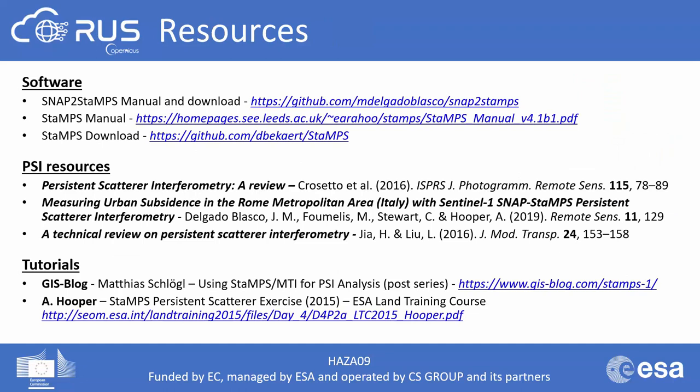For additional resources on PSI processing: for software, refer to the SNAP to StaMPS manual, the StaMPS manual, and the SNAP to StaMPS software download. For PSI resources, I recommend the Persistent Scatterer Interferometry review by Crosetto et al. from 2016. Useful tutorials include the GIS blog by Matthias Schoegl on using StaMPS for PSI analysis — a comprehensive post series — and an exercise by Professor Andrew Hooper for the ISAL training course in 2015.